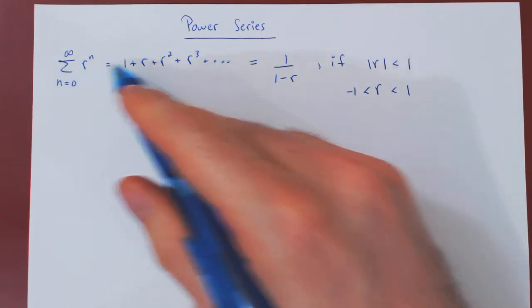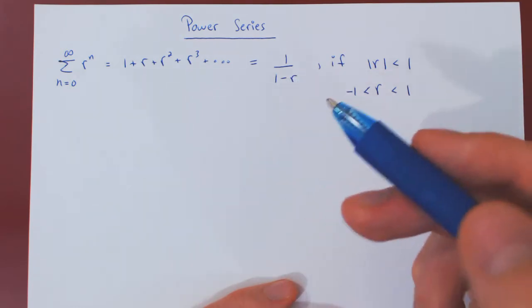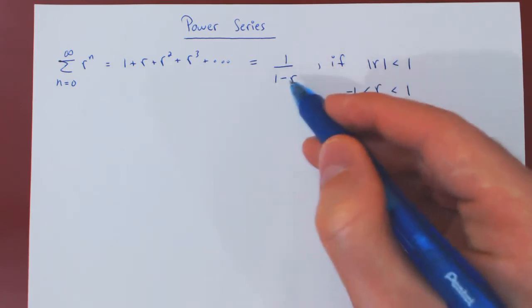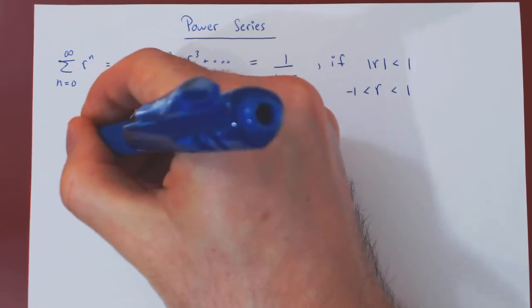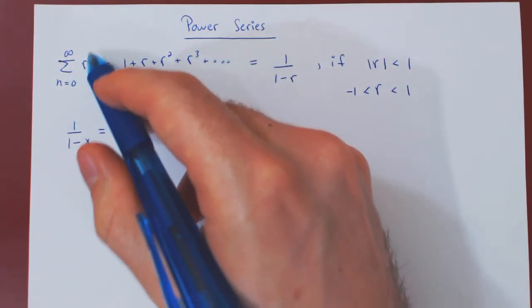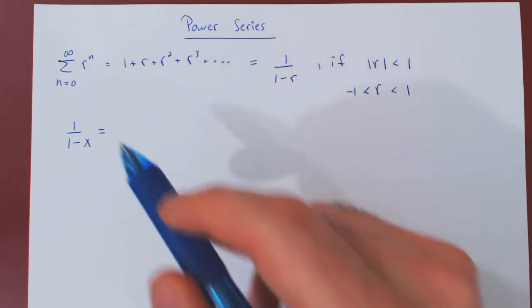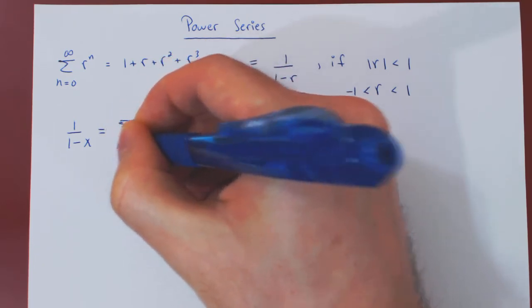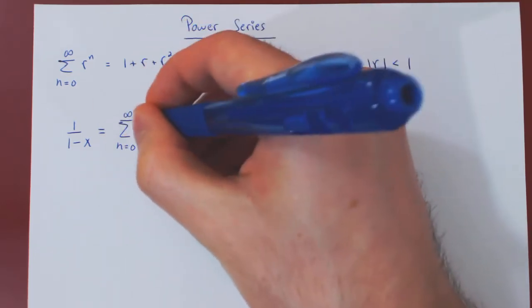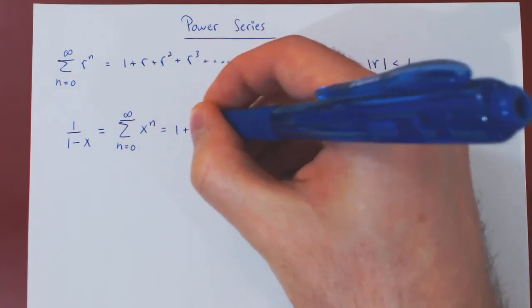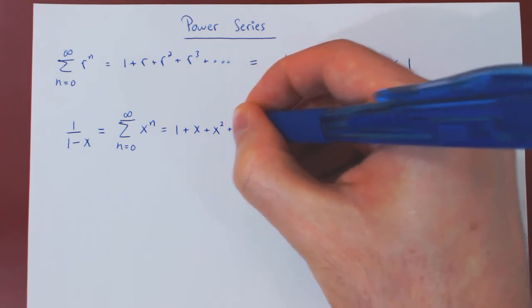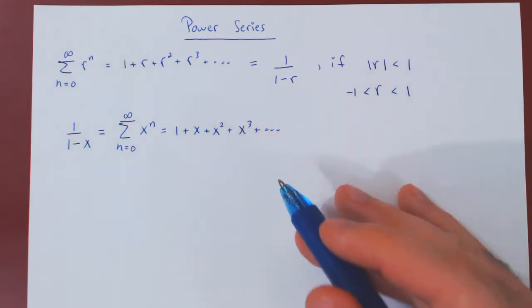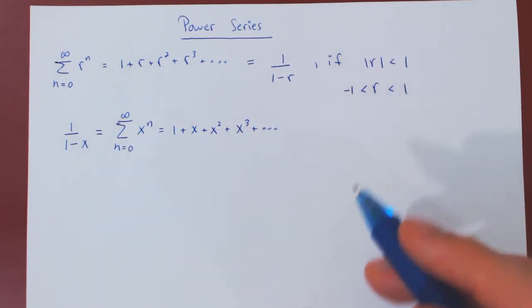Now, let me rewrite this, but replace the variable r by the more familiar variable x. So, this will become 1 over 1 minus x. It will be equal to the sum from n equals 0 to infinity of x to the n. But of course, the equality is only valid if x lies strictly between negative 1 and 1.